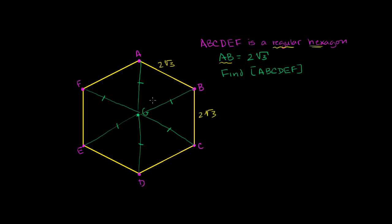Since all six triangles are congruent, their central angles at G are all equal. Let's call that angle x. If you add all six of them up, we've gone 360 degrees around the center, so 6x equals 360 degrees. Dividing both sides by six gives x equals 60 degrees. All six central angles are 60 degrees.